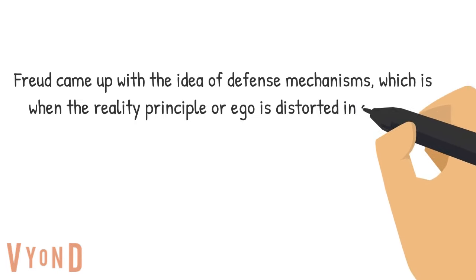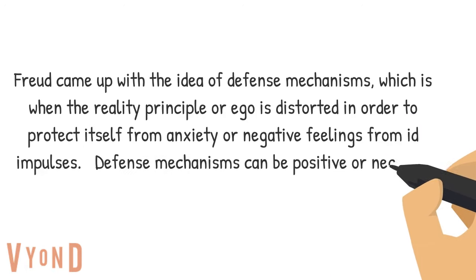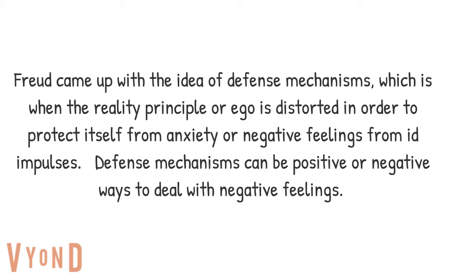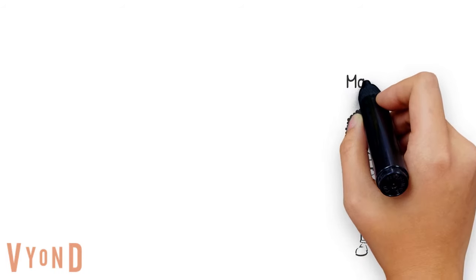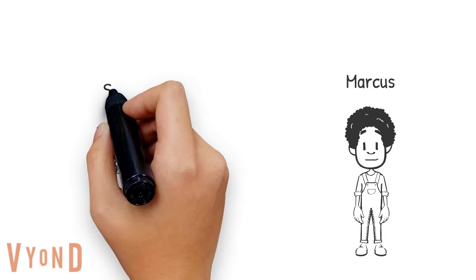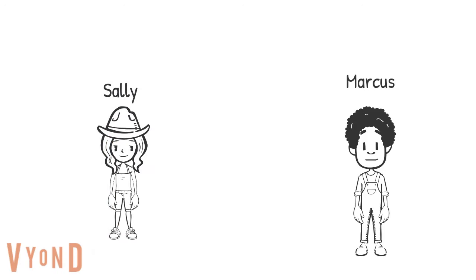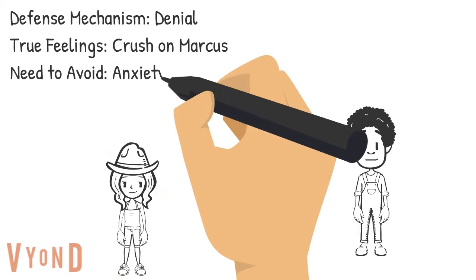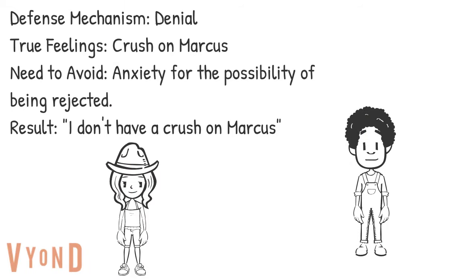Freud came up with the idea of defense mechanisms, which is when the reality principle, or the ego, is distorted in order to protect itself from anxiety or negative feelings from id impulses. Defense mechanisms can be positive or negative ways to deal with negative feelings. This is Marcus, and this is Sally. They are both in middle school and have a big dance coming up. Sally has a crush on Marcus, but is worried that if she told anyone, it would get out and Marcus would reject her. If Sally were to use the defense mechanism denial, she would deny or not believe her true feelings to avoid the anxiety of putting herself out there and being rejected.